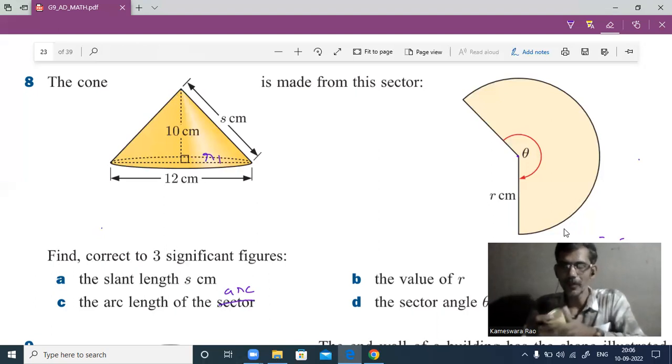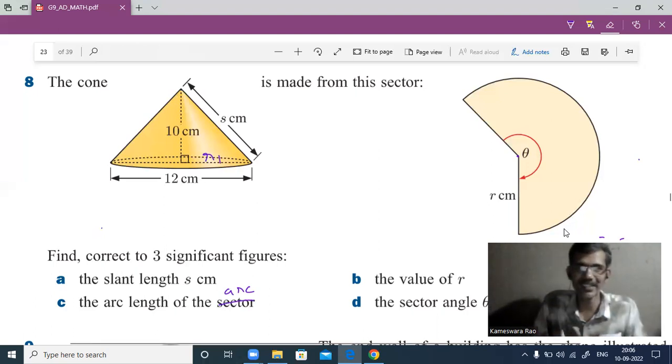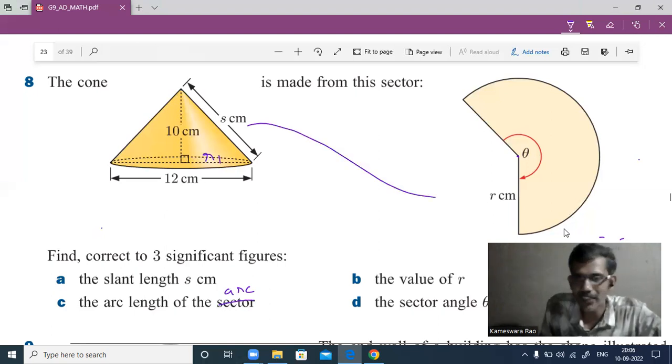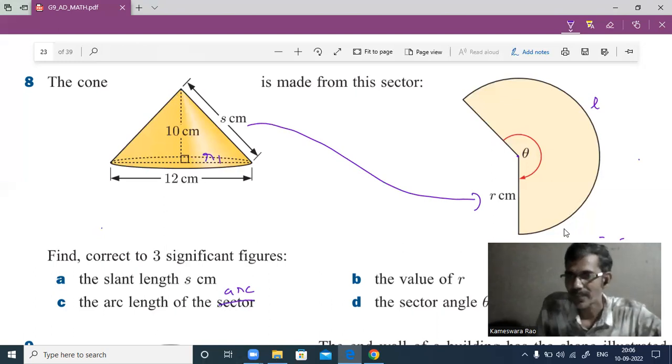How is the slant height transformed to the radius? The circumference of the base, calculated as 2πr, will become the length of the arc.